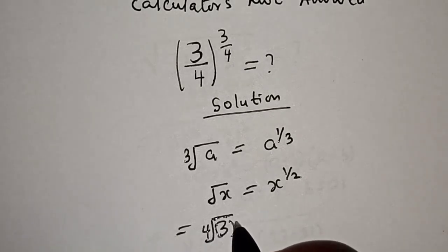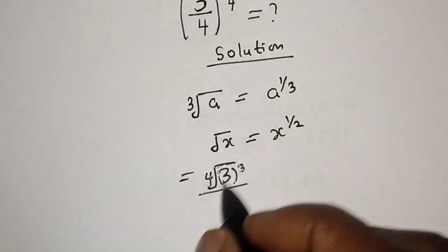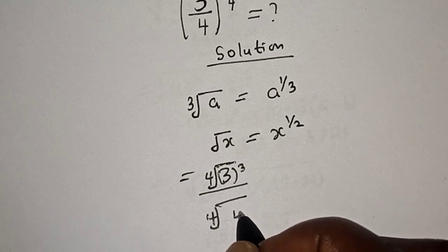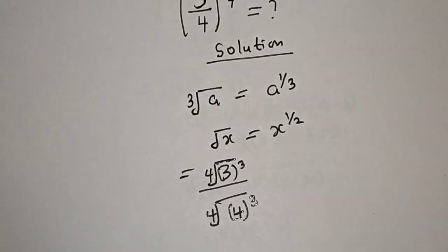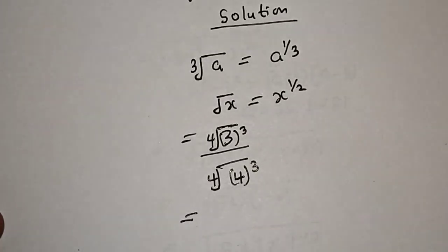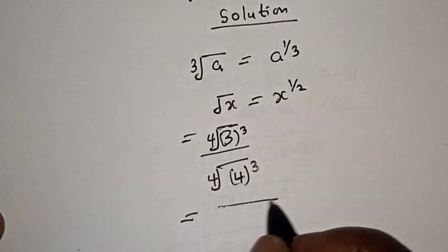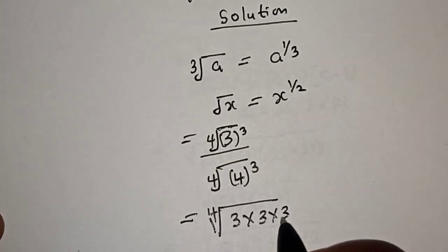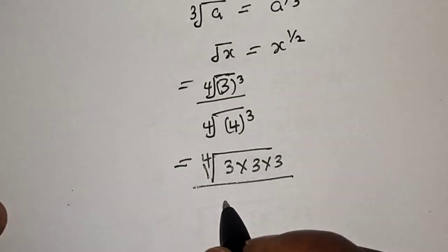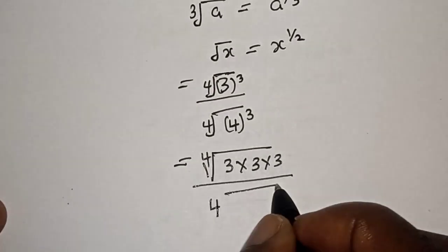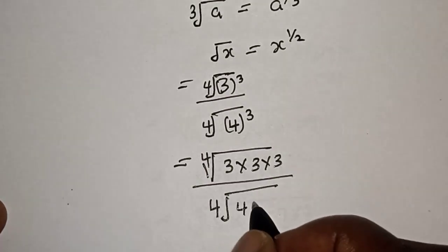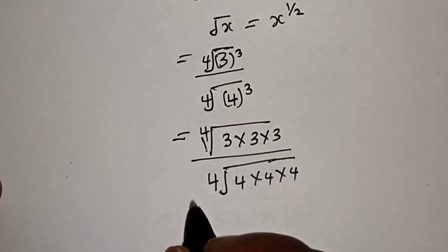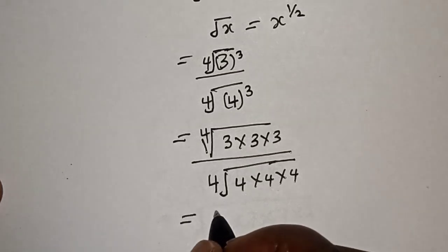3 raised to power 3, over the 4th root of 4 raised to power 3. Then this is equal to the 4th root of 3 times 3 times 3, over the 4th root of 4 times 4 times 4.